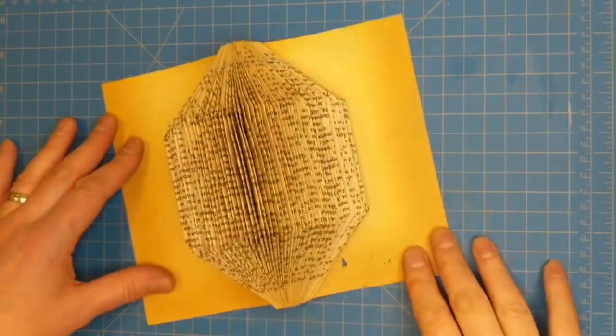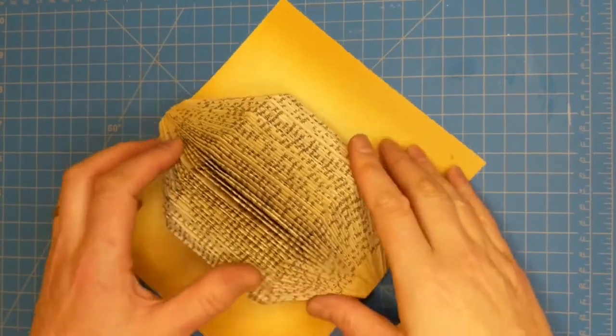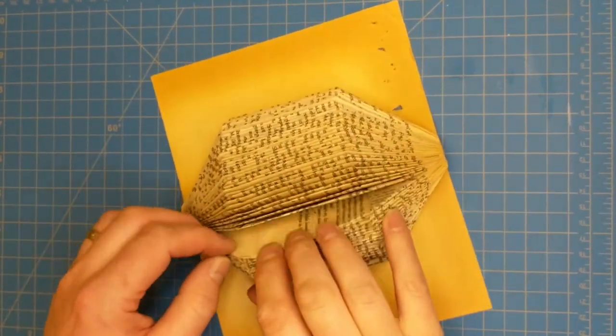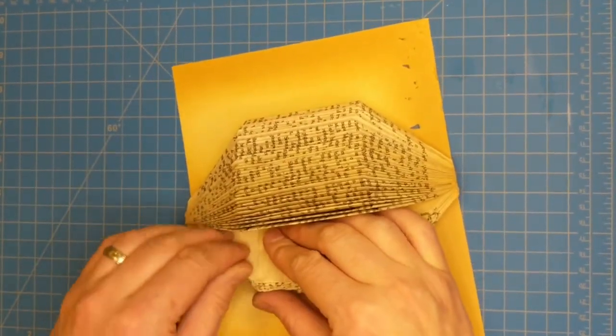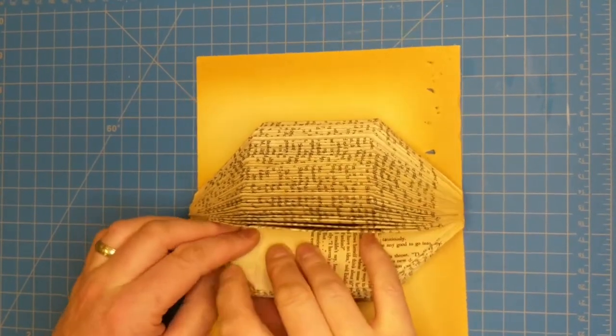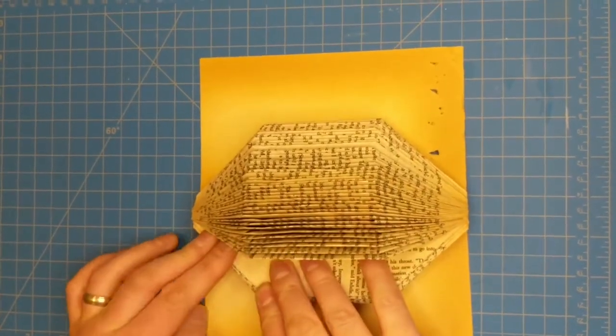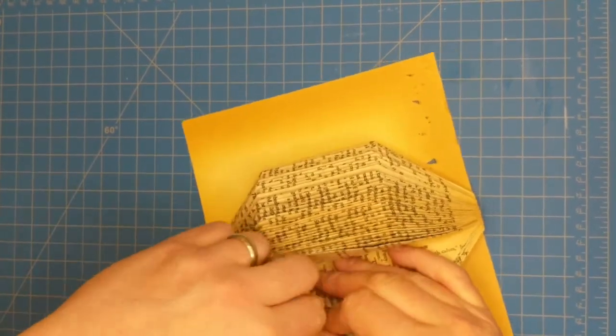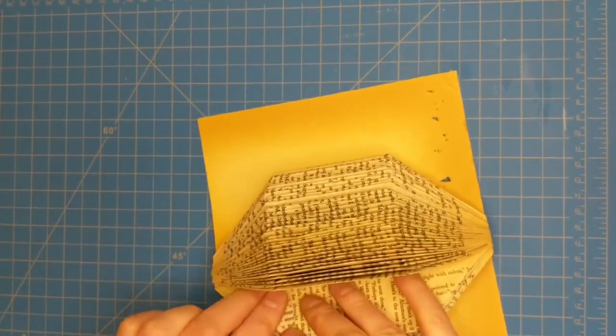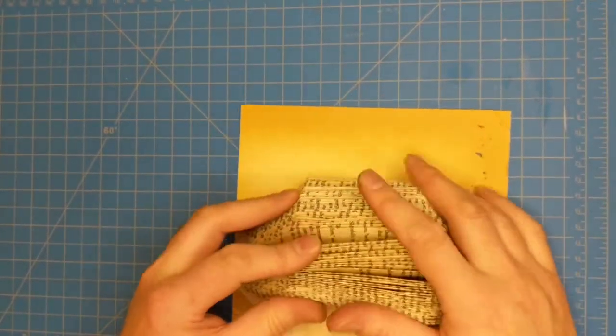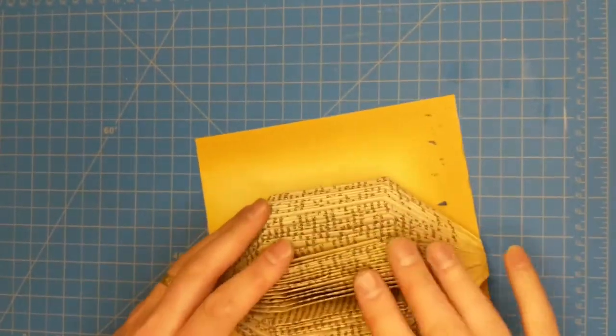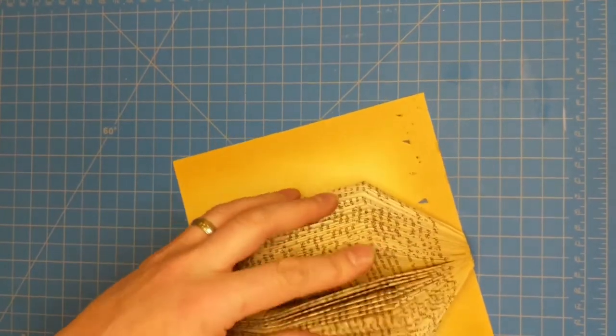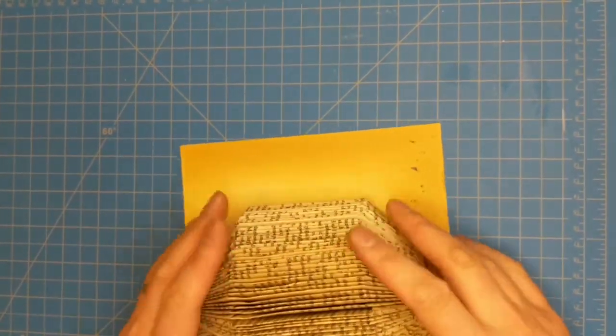So, now that we have finished folding our hedgehog, we can go through it and just adjust any pages that seem to be sticking out a little more than you like. Final little tweaks to it. Fluff him.